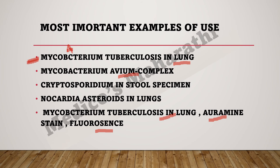To summarize the examples: we use Ziehl-Neelsen acid fast stain for Mycobacterium tuberculosis in the lung, Mycobacterium avium complex, Cryptosporidium in stool specimen, and Nocardia asteroides in the lungs. Additionally, for Mycobacterium tuberculosis, we can also use Auramine stain or fluorescence stain. So Mycobacterium tuberculosis can be stained using three things: Ziehl-Neelsen stain, Auramine stain, and fluorescence.